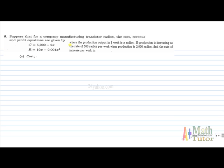It says you have a company and it manufactures transistor radios with given cost, revenue, and profit equations. The details state that the production output in one week is x. If the production is increasing at the rate of 500 per week and the production is 2000, then find the rate of increase per week.